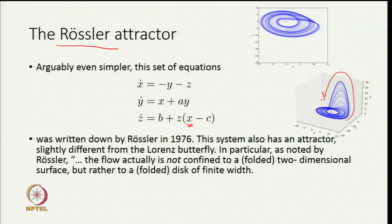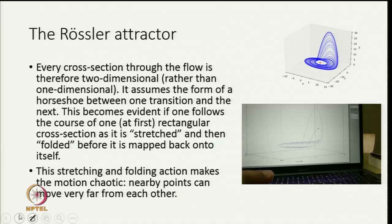This system also has an attractor as you can see, and this is different from the Lorenz butterfly. The Lorenz butterfly has two branches because there are two fixed points which are unstable, but here there is only a single fixed point which is unstable. Rössler pointed out that the flow is not confined to a two-dimensional surface, but to a folded disk of finite width. In the Rössler attractor every cross section through the flow is two-dimensional rather than one-dimensional.